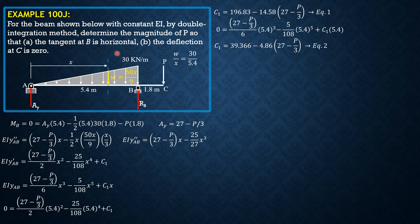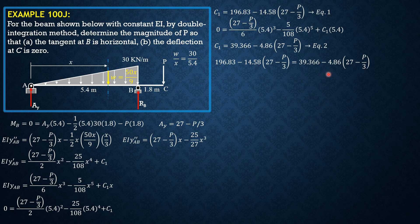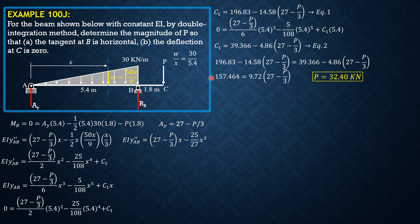Equating Equations 1 and 2: 196.83 minus 14.58(27 minus B/3) equals 39.366 minus 4.86(27 minus B/3). Simplifying: 157.464 equals 9.72(27 minus B/3). Solving: 157.464 over 9.72, then negated plus 27, multiplied by 3 gives P equals 32.4 kilonewtons.